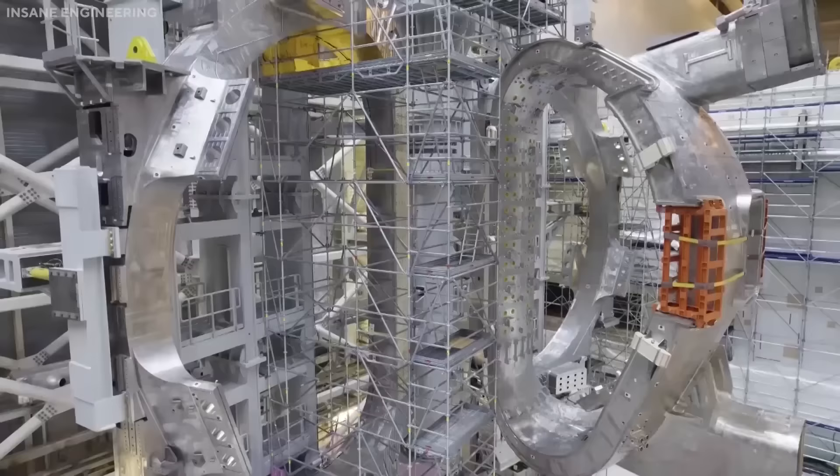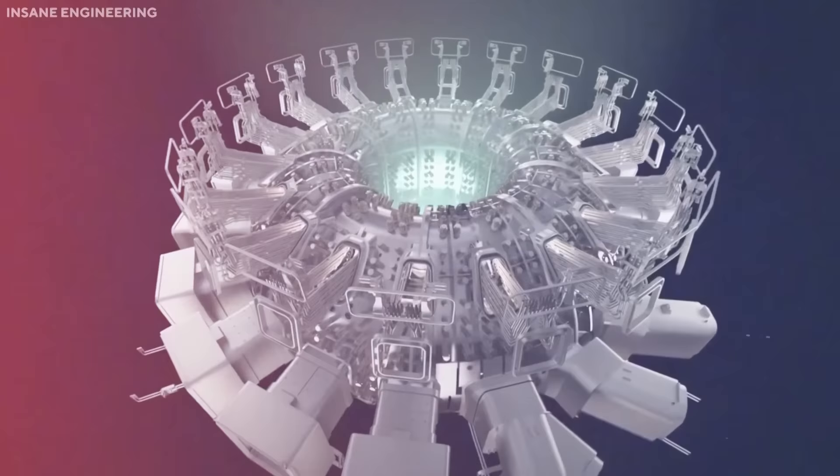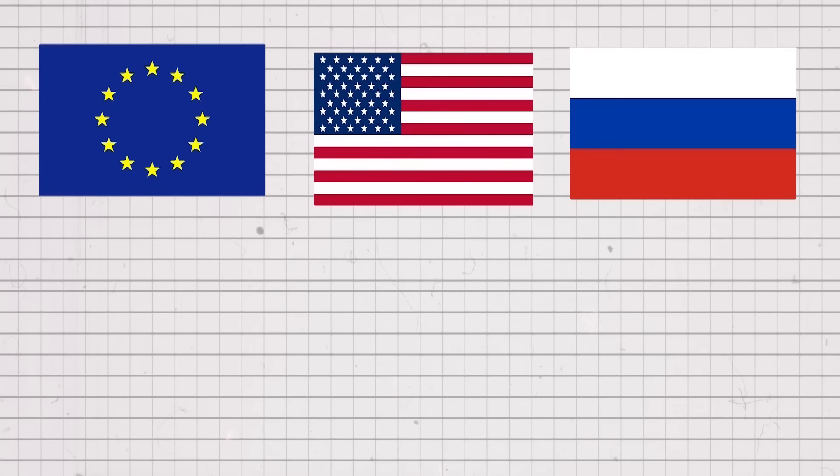The International Thermonuclear Experimental Reactor, or ITER, was born as a collaborative effort between odd bedfellows like the European Union, the United States, the Soviet Union now known as Russia, Japan, and China. India and South Korea would join later.